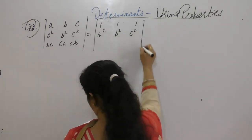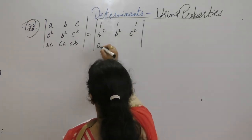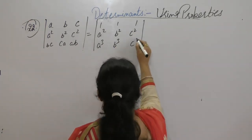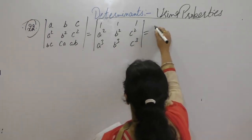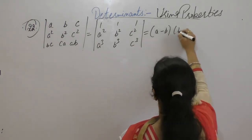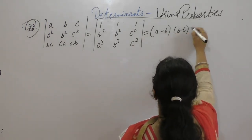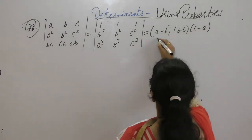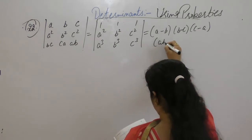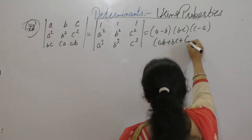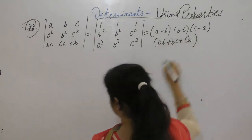The determinant with entries a squared, b squared, c squared; a cubed, b cubed, c cubed equals (a minus b)(b minus c)(c minus a)(ab plus bc plus ca).